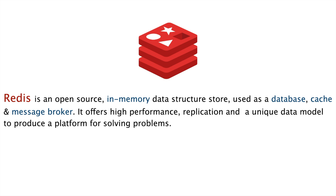Redis is so popular today because it offers high performance, replication of data, persistence, and a unique data model. If you compare it with other NoSQL databases — MongoDB, Cassandra, CouchDB — MongoDB, for instance, supports persisting data in a document or JSON format, but Redis supports multiple data structures, providing the capability to use multiple data structures as convenient to the application.